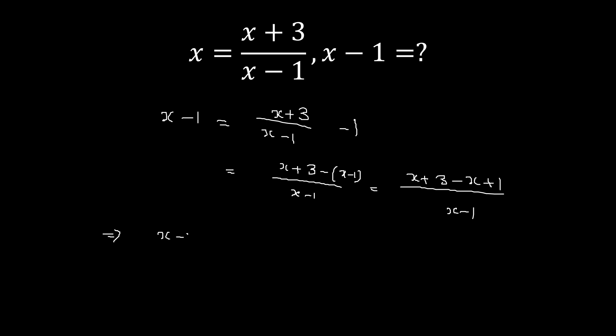From here we get a relationship that says x minus 1 equals 4 over x minus 1. If you look into it, this is saying that x minus 1 squared equals 4.